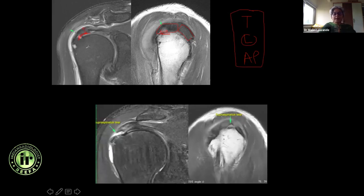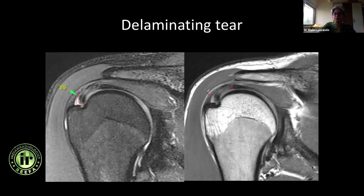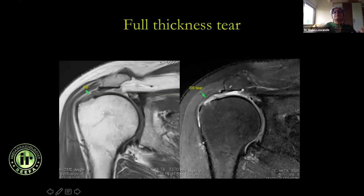Here I have a near full thickness bursal surface supraspinatus footprint tear. Also tell how the tendon looks — this tendon already shows moderate tendinosis. This is the infraspinatus, this is the supraspinatus, so this is at the posterior footprint. The AP dimension is maybe 4 millimeters with about 3 millimeters retraction. Sometimes you may have a delaminating tear — the tear started at the articular surface and then gone interstitial. Give both extents because the superficial and deep fibers may be retracted to different levels — the surgeon needs to know both.